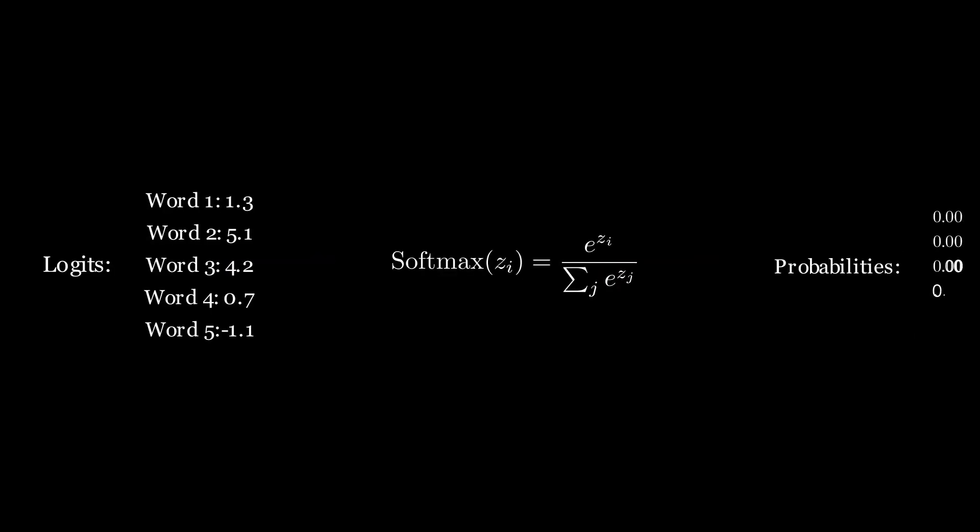The softmax function takes in the logit scores and squeezes them in the range of 0 to 1. This is the same as what happens in multiclass classification problems.